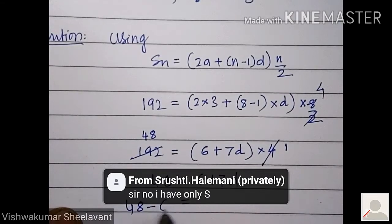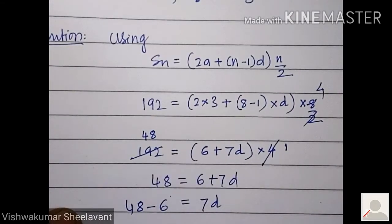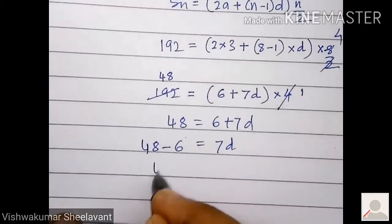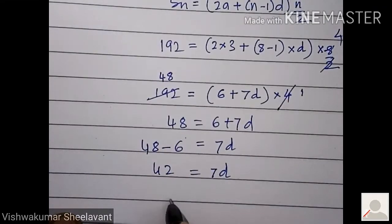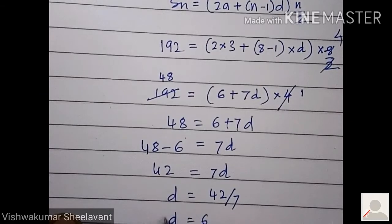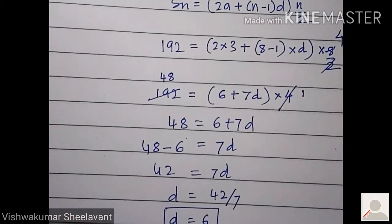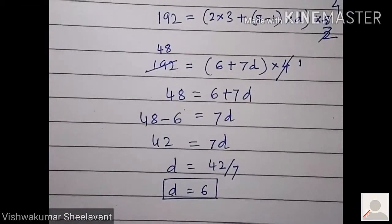48 minus 6 equals 7d. 42 equals 7d. Therefore d equals 42 by 7, so d equals 6.